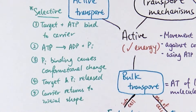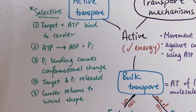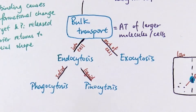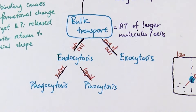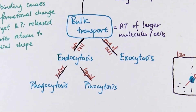In certain cases, we need to transport larger molecules or even whole cells — that is called bulk transport, a form of active transport. Endocytosis is about engulfing things into the cell; exocytosis is about releasing things out of the cell, such as secreting an extracellular enzyme. The energy is used to make vesicles and to make them fuse with the membrane. For endocytosis, engulfing a whole bacterial cell is called phagocytosis; engulfing liquids is called pinocytosis.